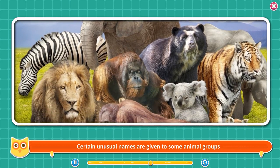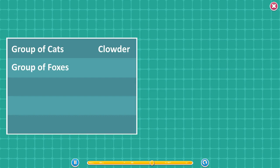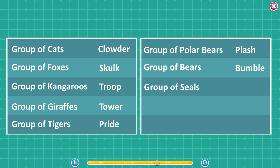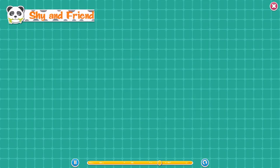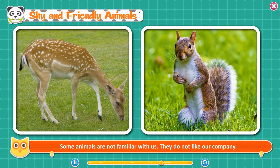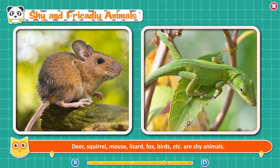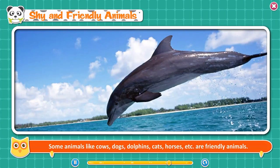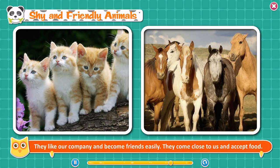Certain unusual names are given to some animal groups: a group of cats is called a clowder, foxes — skulk, kangaroos — troop, giraffes — tower, tigers — pride, polar bears — flash, bears — bumble, seals — trip, camels — flock, and honey bees — swarm. Shy and friendly animals. Some animals are not familiar with us — they disappear when they see us or hear a sound. Deer, squirrel, mouse, lizard, fox, and birds are shy animals. They quickly move away when they see anybody approaching them. Some animals like cows, dogs, dolphins, cats, and horses are friendly animals. They like our company, become friends easily, come close to us, and accept food.